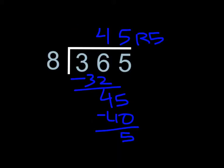Three hundred sixty-five divided by eight equals forty-five with a remainder of five. I solved it by doing eight times four, which equals thirty-two. I subtracted thirty-two from thirty-six, then put down the five. The closest multiplication to forty-five is eight times five, which equals forty.